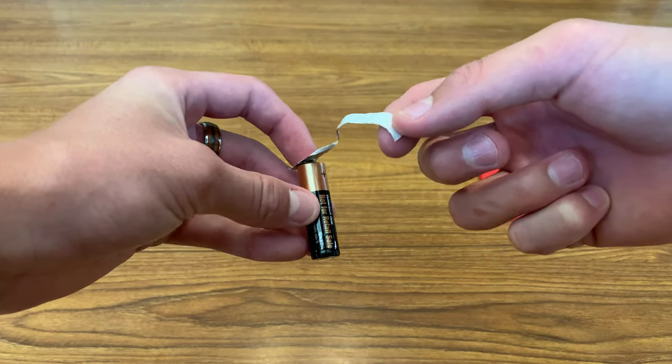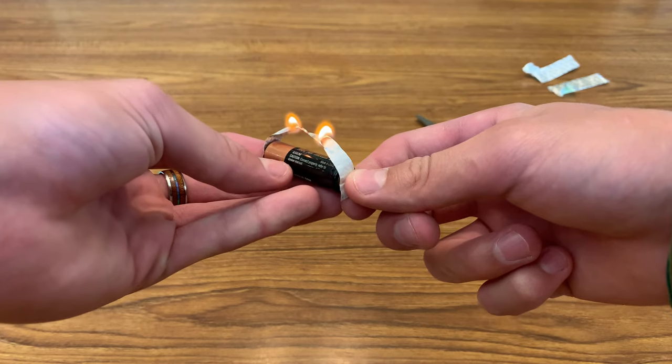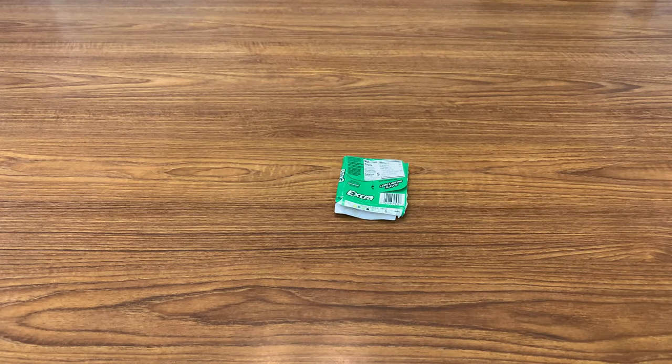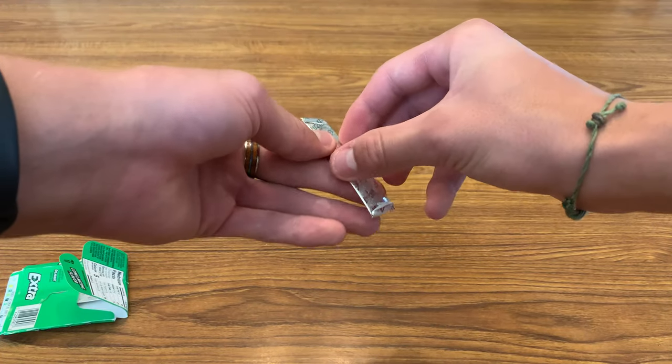Here's how to start a fire using just a gum wrapper and a battery. First, grab that smushed gum package in the back of your pocket, then take out a stick of gum and carefully unwrap it, making sure to not rip the wrapper.